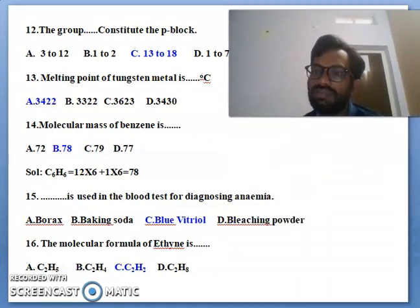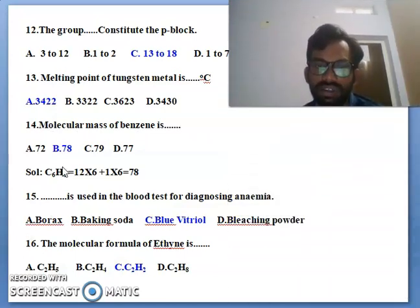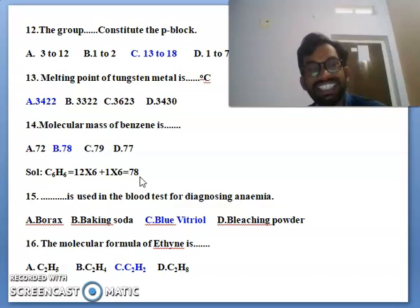So molecular mass of benzene is, how to explain the molecular mass of benzene. Benzene molecular mass or molecular weight is 78. You can see benzene formula is C6H6. So 12 into 6. Carbon mass is 12 and atomic number is 6 plus hydrogen atomic mass is 1. How many hydrogens here? 6. So total 12 into 6 plus 1 into 6 is equal to 78. So molecular mass of benzene is 78.